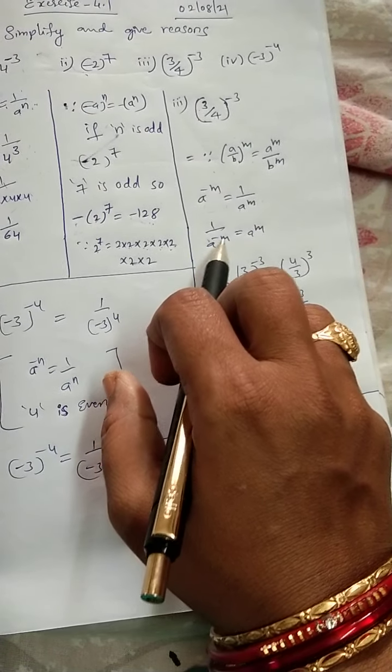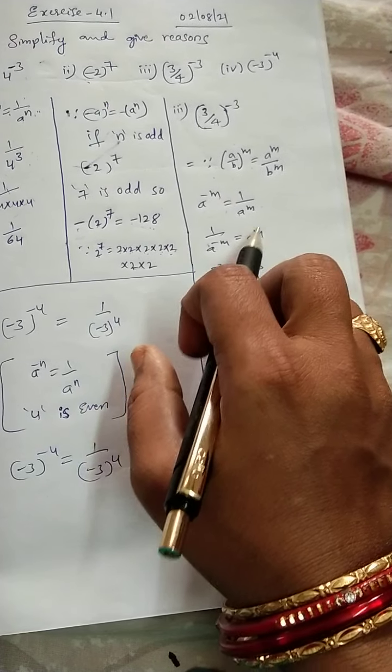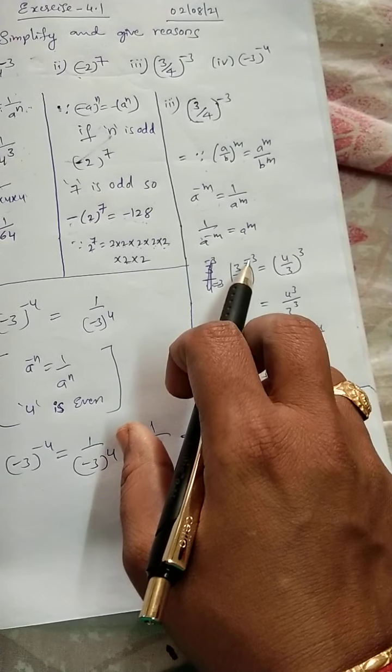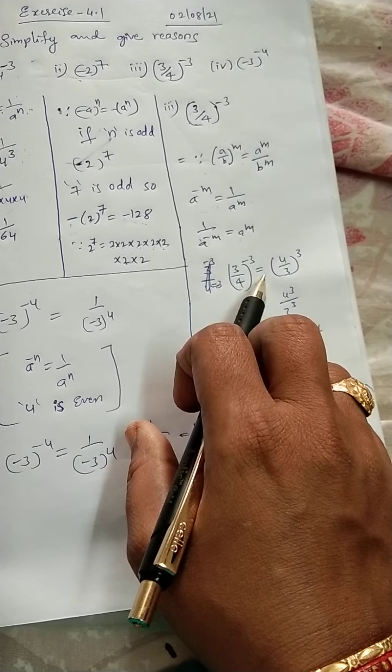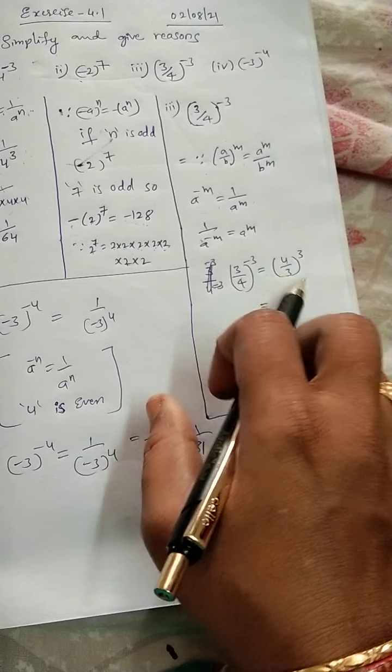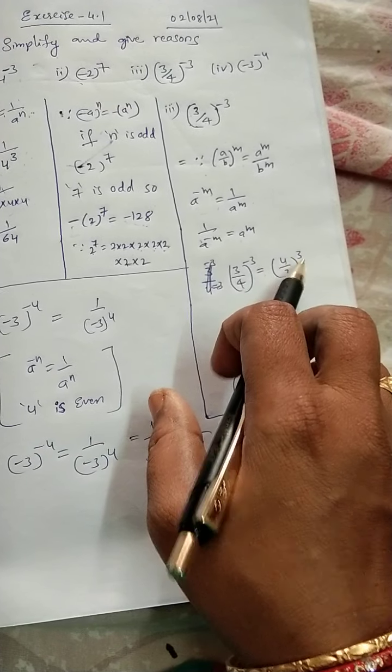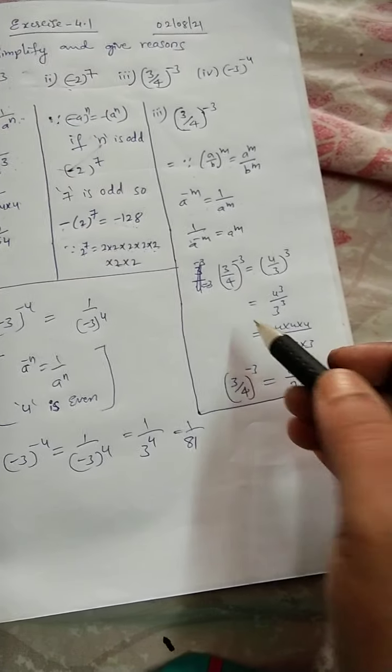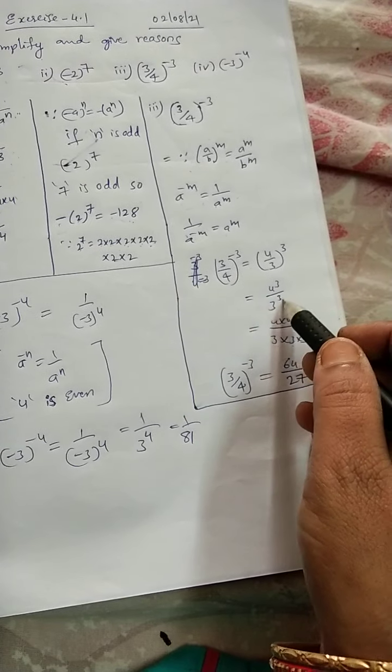Here, A power minus M will become numerator means A power plus M will come. Here 3 by 4 whole power minus 3 we can write as 4 by 3 whole power positive power will come. Why? Because we are changing the numerator into denominator, denominator into numerator. So, now 4 cube by 3 cube, individual powers we do.